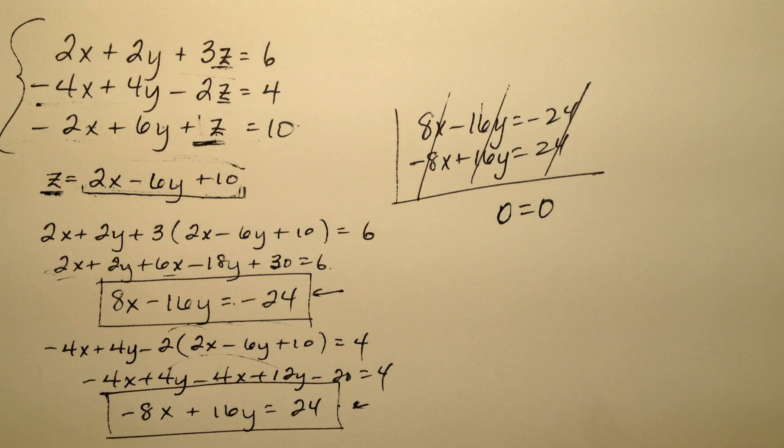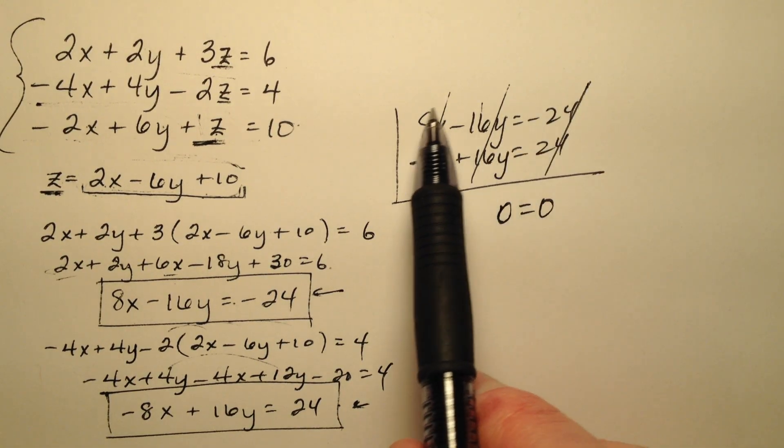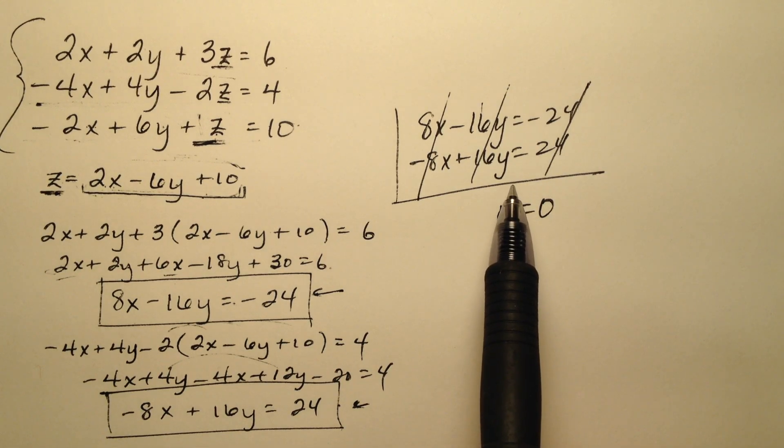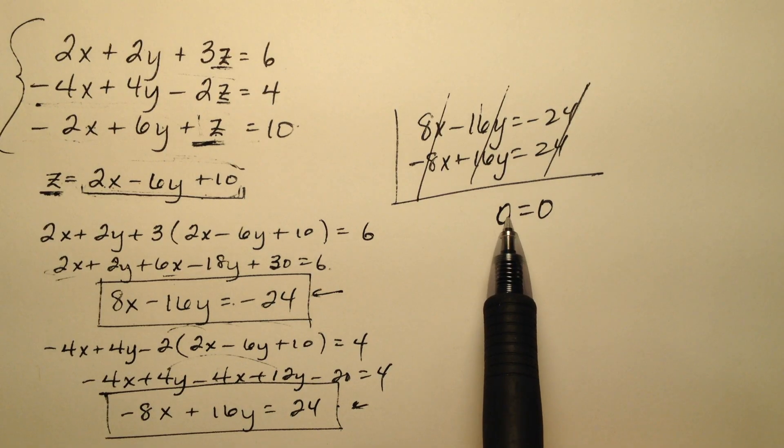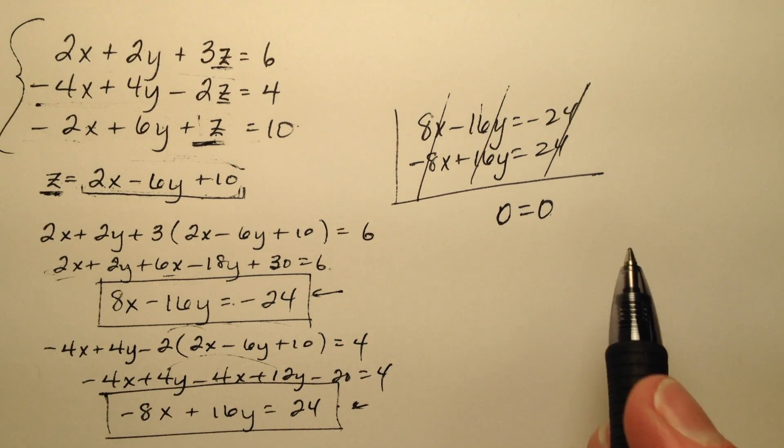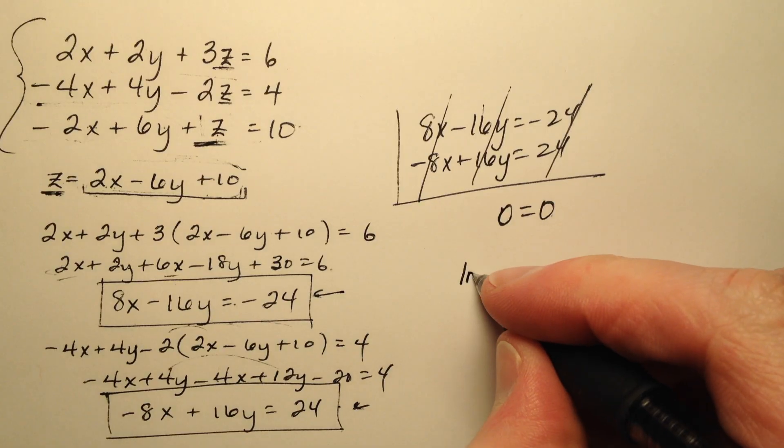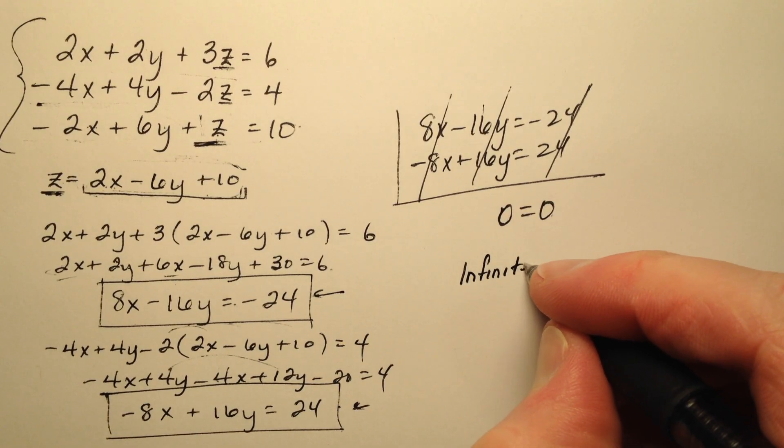So I know from past experience that when all the variables cancel, I'm either going to be left with a true statement or a false statement. And in this case, it's a true statement. 0 does equal 0. So I'm going to say this system has an infinite number of solutions.